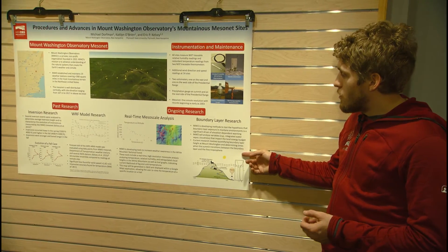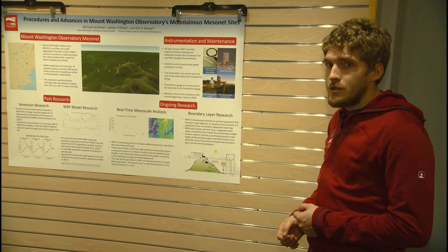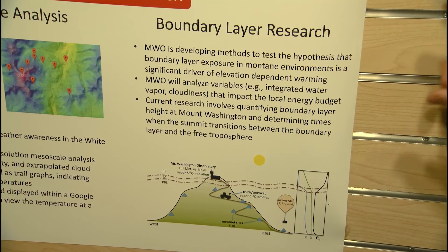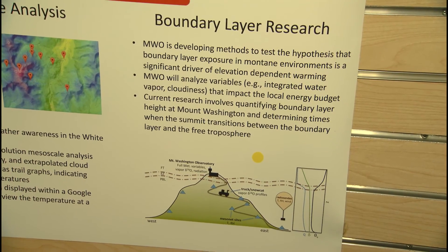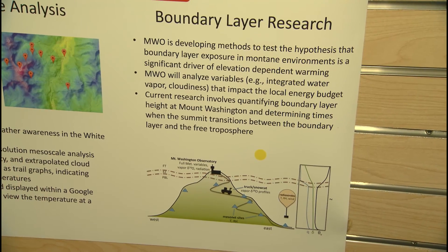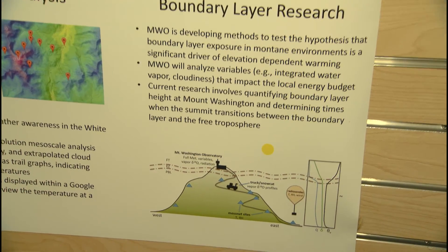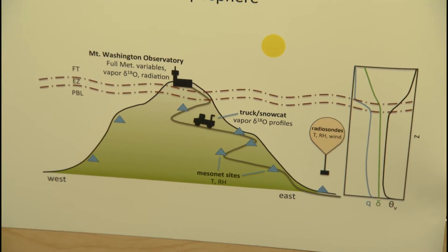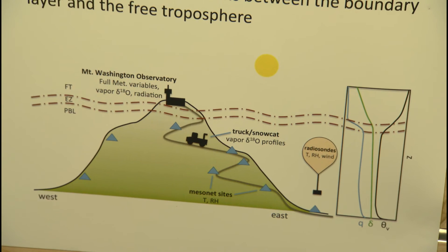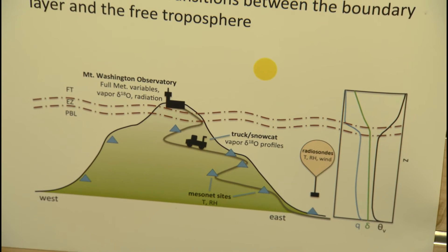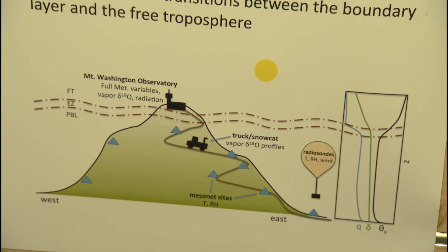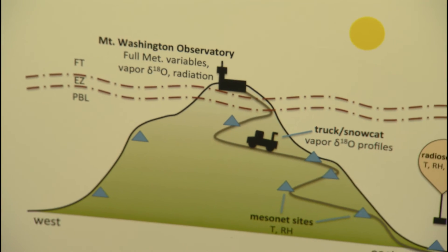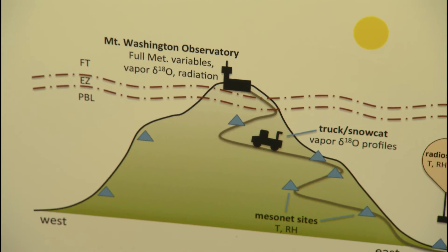We're also currently doing some boundary layer research. The boundary layer is the layer of air closest to the ground. Sometimes the summit is above this boundary layer, and sometimes the summit is below it. This research is looking at the Mesonet sites that we have and determining where specifically the boundary layer is, and how that affects temperature on the summit.